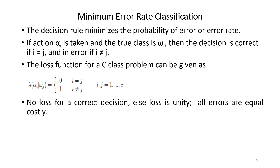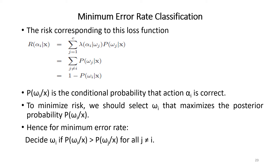Minimum error rate classification: the decision rule always minimizes the probability of error or error rate. If action alpha_i is taken and the true class is omega_j, the decision is correct if i = j and in error if i ≠ j. The loss function for a c-class problem is 0 for a correct decision and 1 for a wrong decision, meaning all errors are equally costly. The risk for this loss function simplifies to 1 - p(omega_i | x), where p(omega_i | x) is the conditional probability that action alpha_i is correct. To minimize the risk, select omega_i that maximizes the posterior probability p(omega_i | x). Hence, for minimum error rate, decide omega_i if p(omega_i | x) > p(omega_j | x) for all j ≠ i.